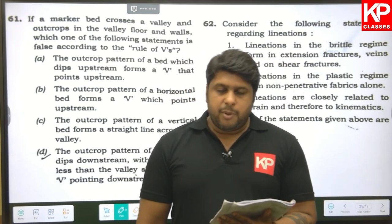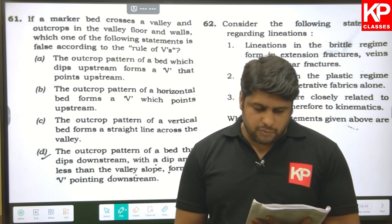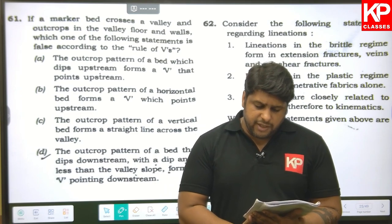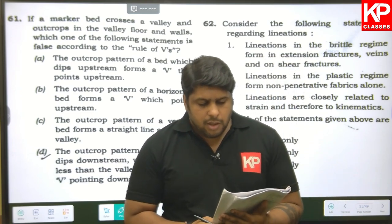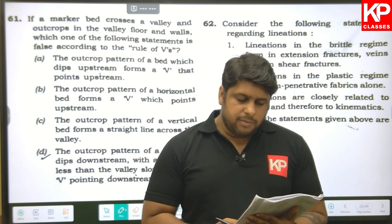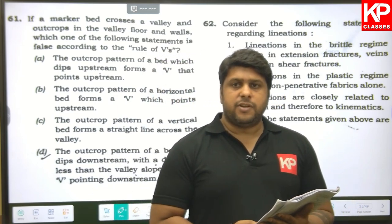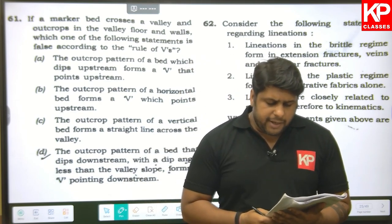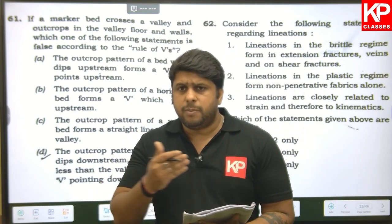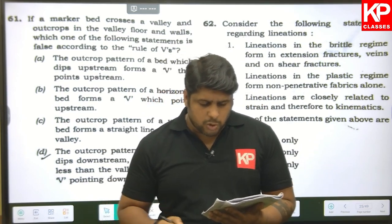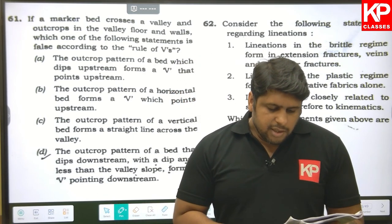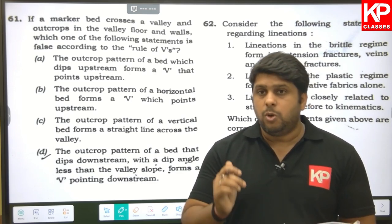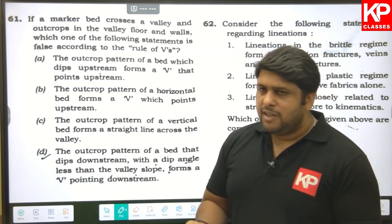Question sixty-one: regarding the rules of V — the outcrop pattern of a bed dipping upstream forms a V pointing upstream (correct); a horizontal bed forms a V pointing upstream (this is an exception of the rule, correct); vertical beds do not form an apex on either side (correct). The wrong statement is: 'the outcrop pattern of a bed dipping downstream with a dip angle less than the valley slope forms a V pointing downstream' — it actually points upstream. So D is the right answer.